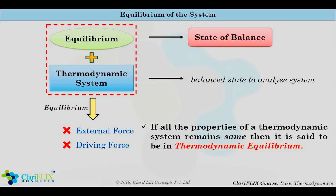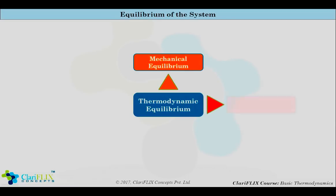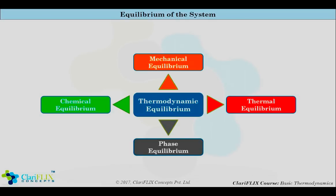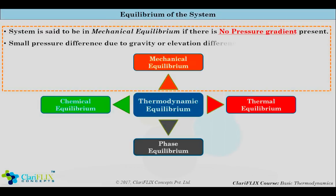Now let us understand thermodynamic equilibrium. If I want to say my system is in thermodynamic equilibrium, then my system must be in mechanical equilibrium, thermal equilibrium, phase equilibrium, and chemical equilibrium. A system is said to be in mechanical equilibrium if there is no pressure gradient present in the system. A small pressure gradient difference due to gravity and elevation difference is acceptable. So mechanical equilibrium means the pressure distribution over the system is the same.